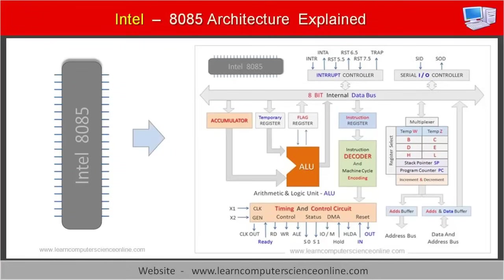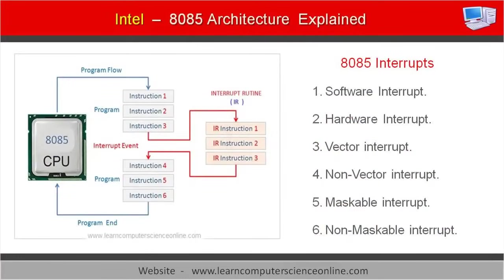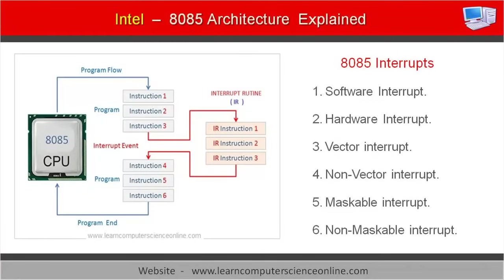Let us now discuss interrupts, another important component of the 8085 architecture. Interrupts are signals sent to the microprocessor to pause the current activity and attend to requests sent by external devices. In other words, interrupts are external events that occur in real time to seek the processor's response. Interrupts can be generated either by program instructions or by peripheral devices connected to the system. The 8085 architecture supports eight software interrupts and five hardware interrupts.